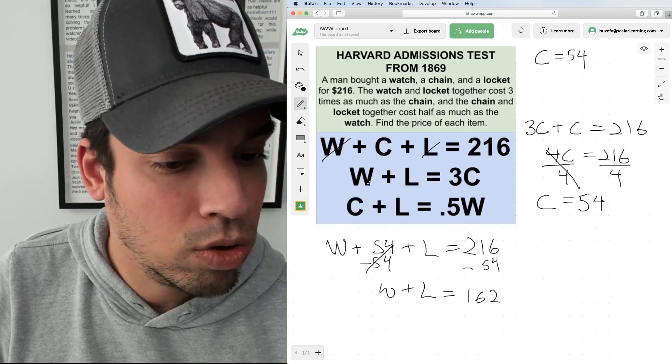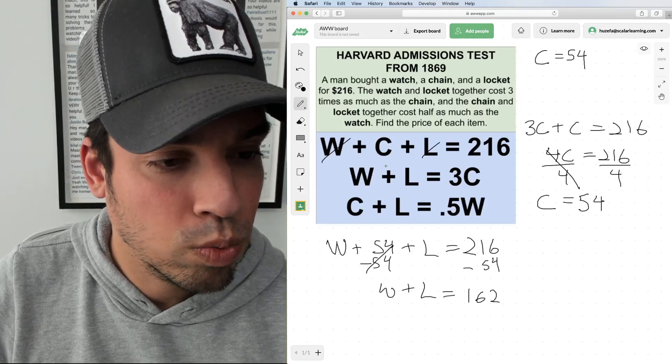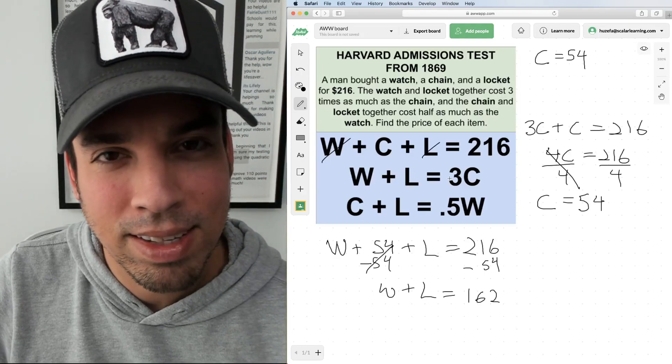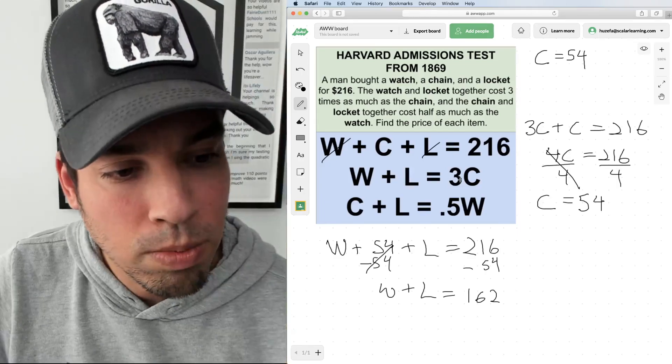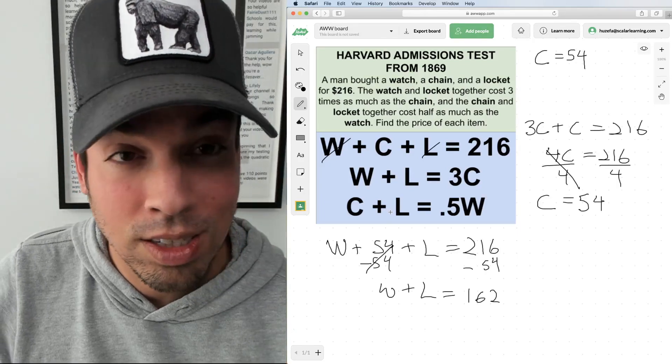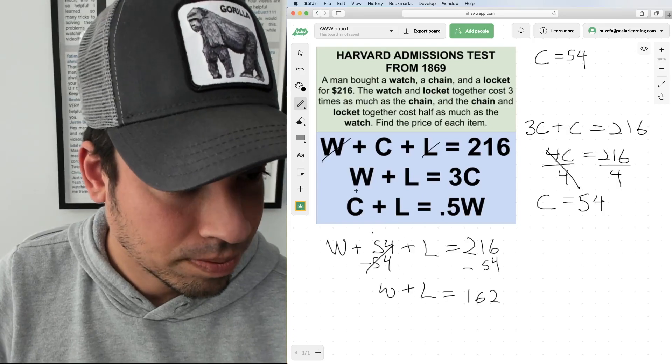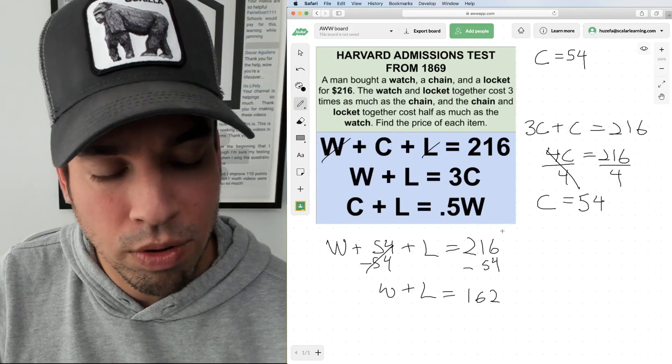W plus L equals 162. That's by the way going to be the same thing I'd get here if I plugged 54 in, so that doesn't help too much. But what about this bottom equation? Let's use this guy. I've got C plus L equals 0.5W.